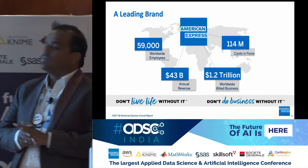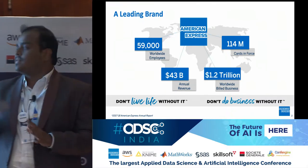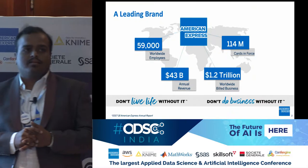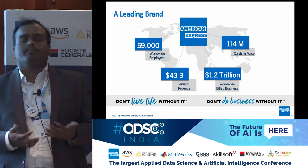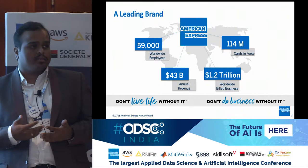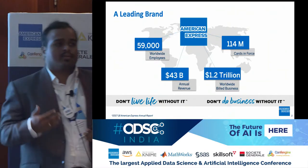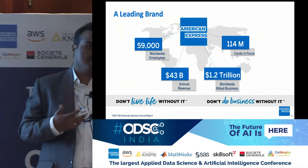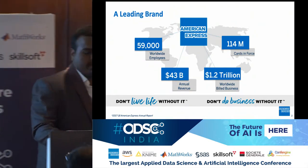American Express should need no introduction to this crowd. We have 59,000 worldwide employees and 114 million cards. What that means is we continuously get information about 114 million cards and customers, and we are continuously making business decisions regarding their financial risk, marketing prospects, and so on. There is a lot of data in play here and hence a lot of scope for machine learning.